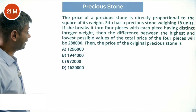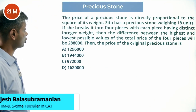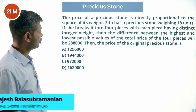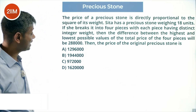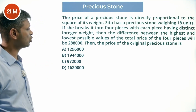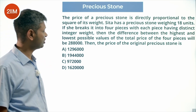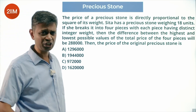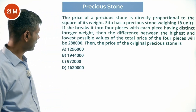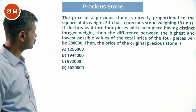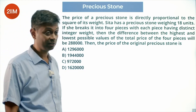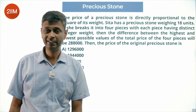The price of a precious stone is directly proportional to the square of its weight. Sita has a precious stone weighing 18 units. If she breaks it into four pieces with each piece having distinct integer weight, find the difference between the highest and least possible values of the total price of the four pieces.